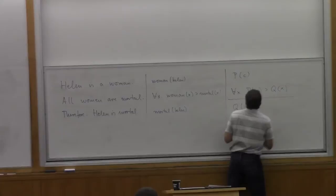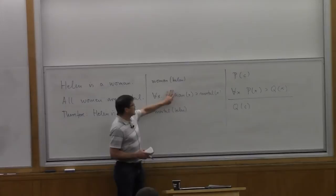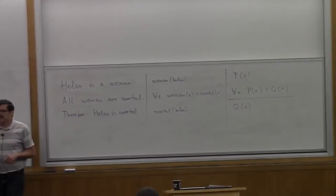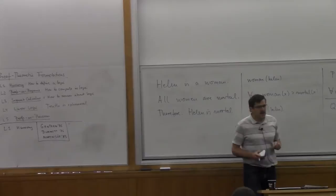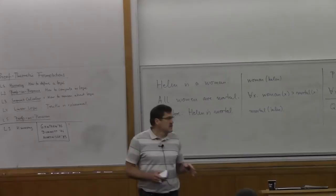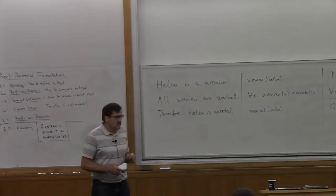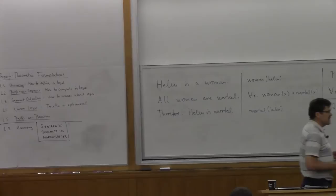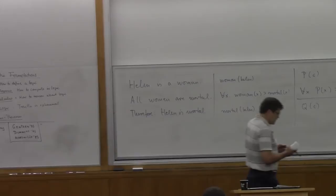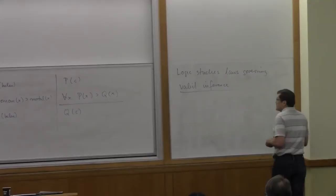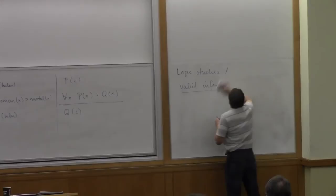In logic we ask whether the deduction from those two premises to the conclusion is valid — at the level of abstraction where P and Q are arbitrary propositions, x is a quantified variable, and c is a constant. The next question is why spend a whole lecture on how to define a logic. One might think that since Aristotle or 1935 we already know what logic is, but that's not the case — there are many different logics important for computer science.